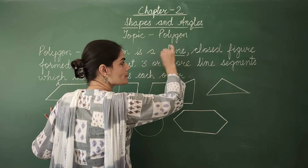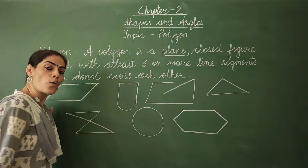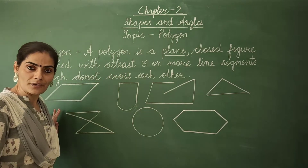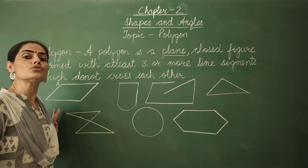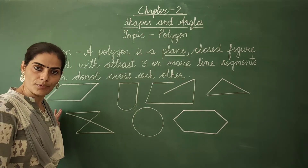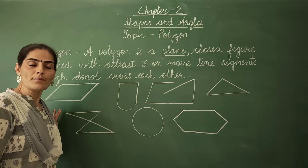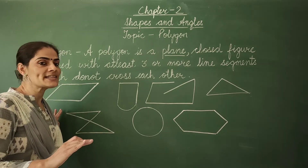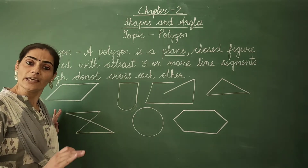First of all it is a plane figure. Now what is a plane figure? A plane figure is a two dimensional shape. A two dimensional shape is flat. It doesn't have any thickness.